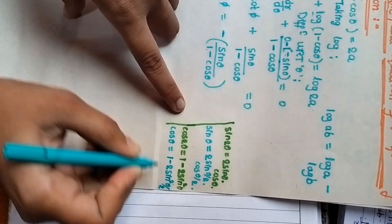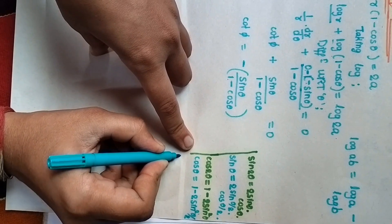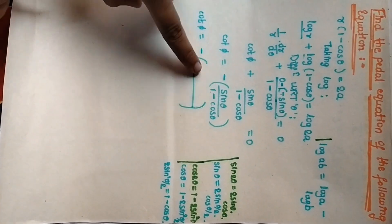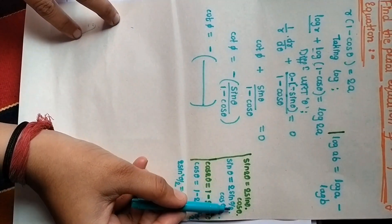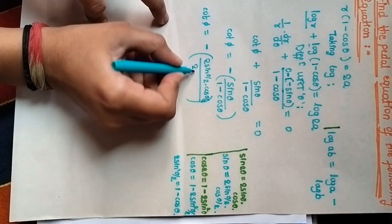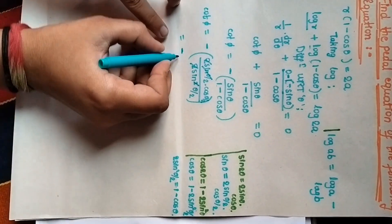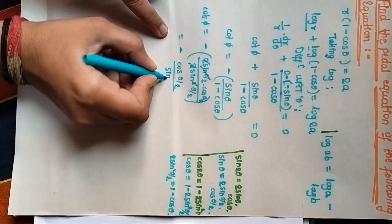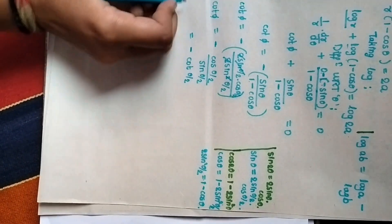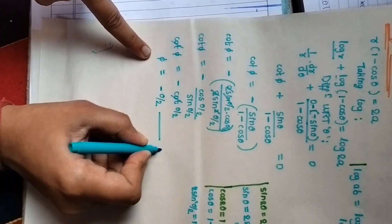We want 1 minus cos theta. We know that cos theta equals 1 minus 2 sin² (θ/2), so 1 minus cos theta equals 2 sin²(θ/2). Substituting: sin theta is 2 sin(θ/2) cos(θ/2) and 1 minus cos theta is 2 sin²(θ/2). The 2s cancel, one sin(θ/2) cancels, and we get minus cos(θ/2) divided by sin(θ/2), which is minus cot(θ/2). So cot φ equals minus cot(θ/2), giving φ equal to minus θ/2. Call this equation 1.